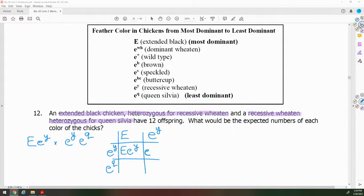We have an E, EY, then EY, EY, E, EQ, and EY, EQ. We always write the most dominant allele first.